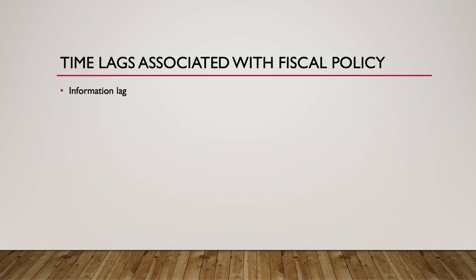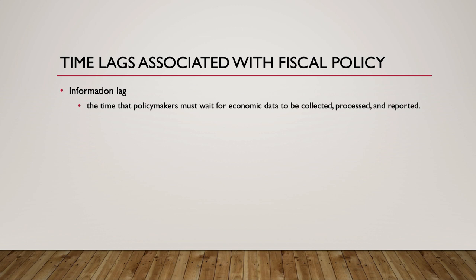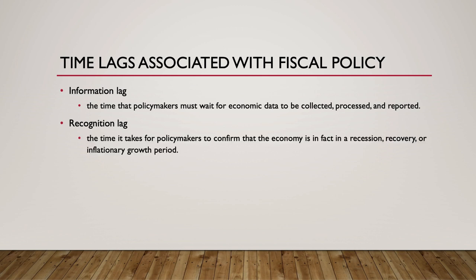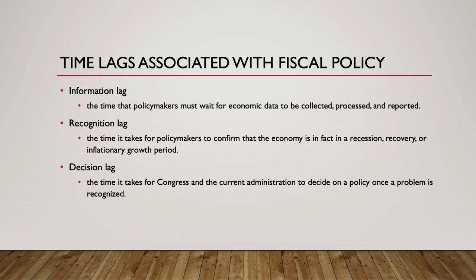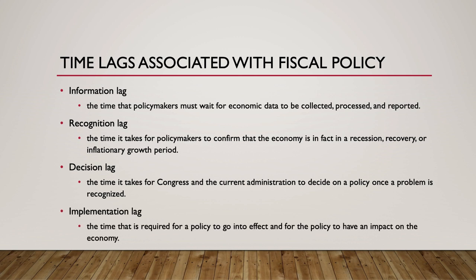An information lag is the time that policy makers must wait for economic data to be collected, processed, and reported — most economic data takes at least three months to become available. A recognition lag is the time it takes for policy makers to confirm that the economy is in fact in a recession, recovery, or inflationary growth period. It is difficult to interpret short-run economic data due to the fact that variations are typical and often due to randomness. A decision lag is the time it takes for Congress and the current administration to decide on a policy once a problem is recognized. And finally, an implementation lag is the time required for a policy to go into effect and for the policy to have an impact on the economy.